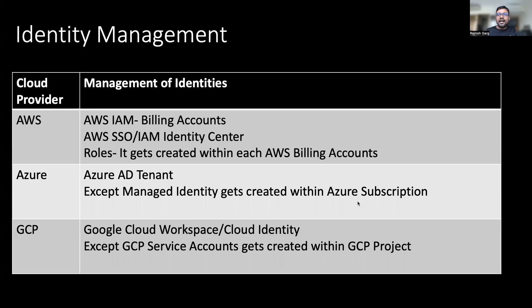Let's look into the identity management aspect first. In AWS, you can manage your identities within each and every AWS billing account. But nowadays, as more organizations are adopting a multi-AWS account strategy, you might be leveraging AWS SSO, now named as IAM Identity Center. Within AWS, there is one identity type called IAM roles. Though you can manage IAM roles from the AWS SSO permission sets, behind the scenes, IAM roles still get created within each and every billing account.